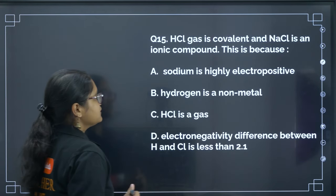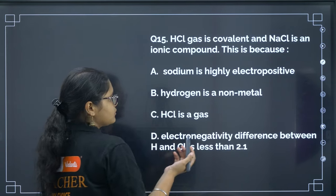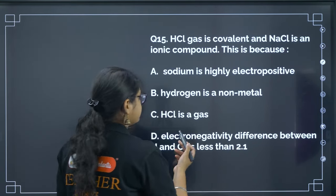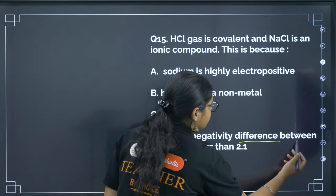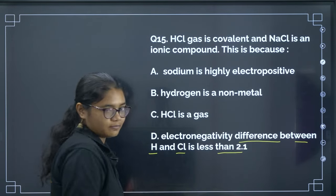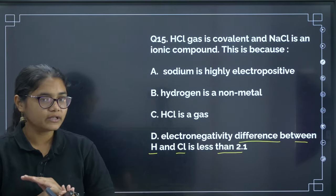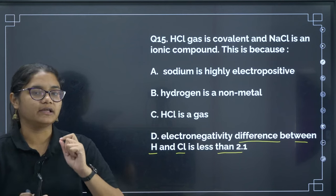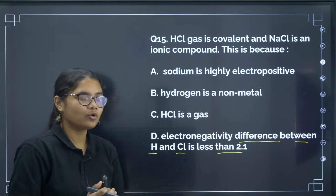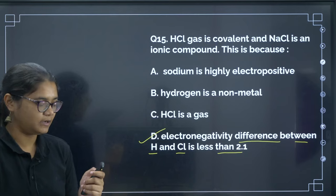Next: HCl is covalent and NaCl is ionic — this is because the electronegativity difference between H and Cl is less than 2.1. Whenever the electronegativity difference is more than 2.1 we get ionic compounds; if less than 2.1 we get covalent compounds. The correct answer is option D.